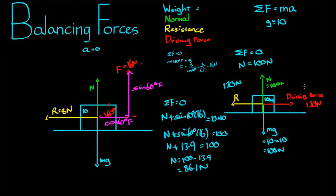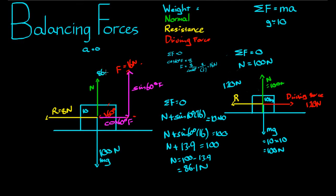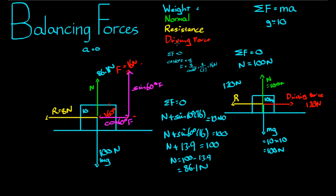In the first case, the normal force was exactly equal to the weight force because there was no other force helping to lift the object. In this question, the weight force is 100 newtons but the normal force is only 86.1 newtons. The reason the normal force doesn't have to completely counteract gravity is because we also have some upward force from the driving force helping it out. In further videos we're going to look at questions where the sum of forces is not zero and objects are actually accelerating — solved in a similar way, but a bit more interesting. Thank you.